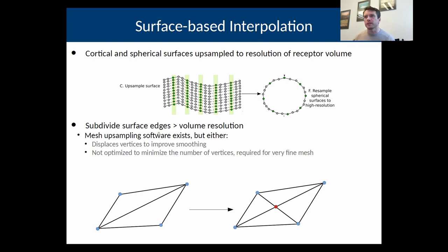We can also resample the spherical surface to the same high resolution. I ended up recreating a mesh upsampling software to do this. The reason is that the other software I tried either displaced vertices, probably to improve the smoothness of the surface, but that wasn't desirable in this case. Also this upsampling process produces really large meshes, so it's important that it's optimized to minimize the number of vertices needed to have the desired resolution.